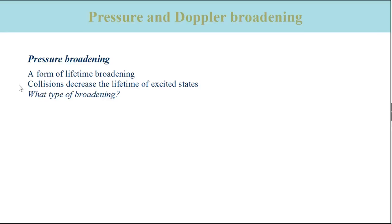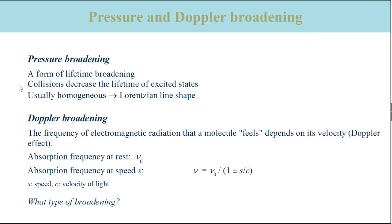Pressure broadening is usually homogeneous because it affects all molecules in the same way and produces a Lorentzian line shape in most cases.